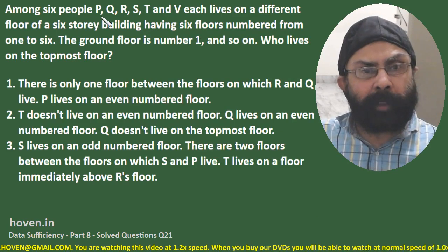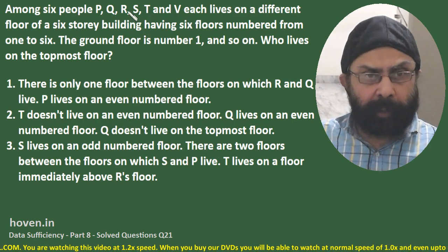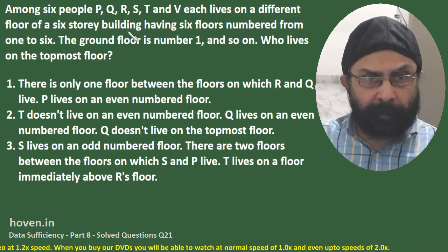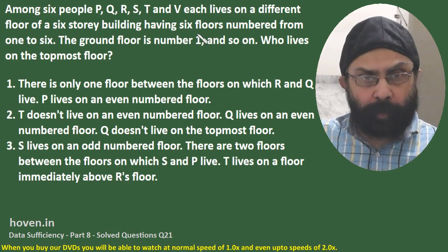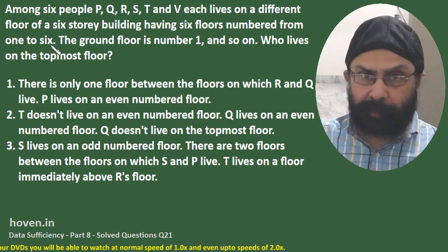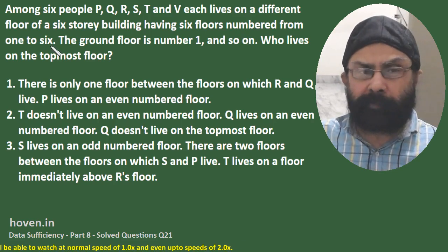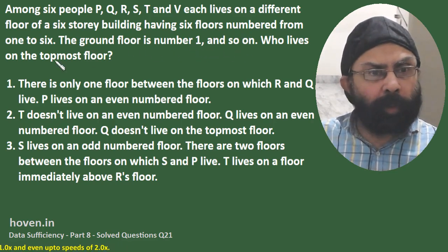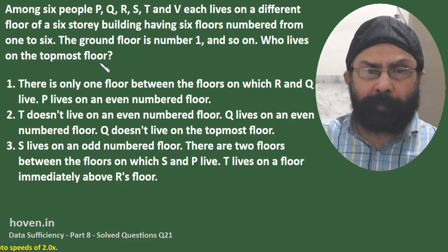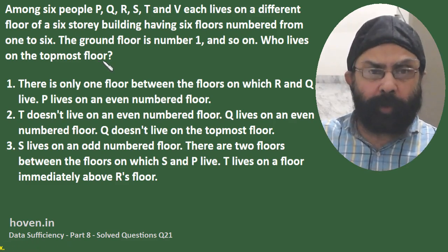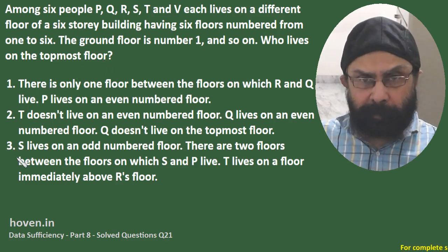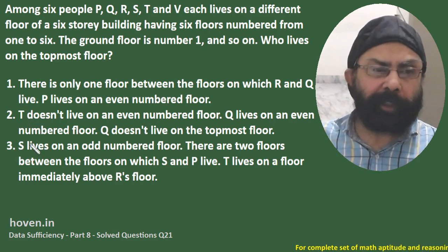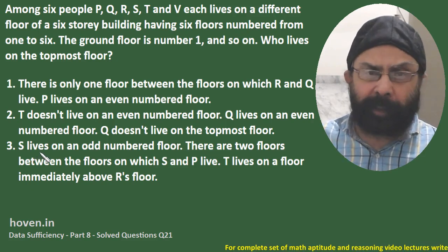Among six people P, Q, R, S, T and V, each lives on a different floor of a six-story building. The building has six floors numbered from one to six. The ground floor is number one and so on. Who lives on the topmost floor? We have to determine the person living on the topmost floor on the basis of three statements. We will see whether the first one alone is sufficient, the second alone is sufficient, the third alone is sufficient, or some combination helps us out.